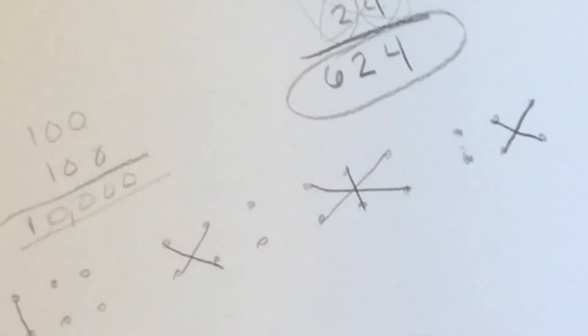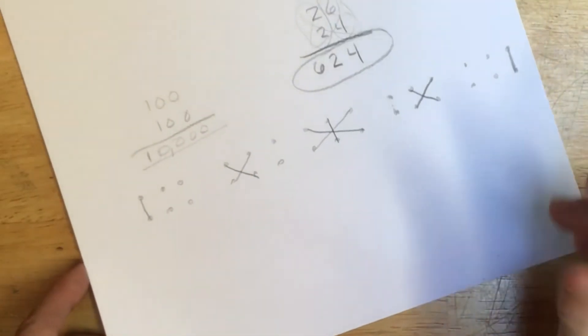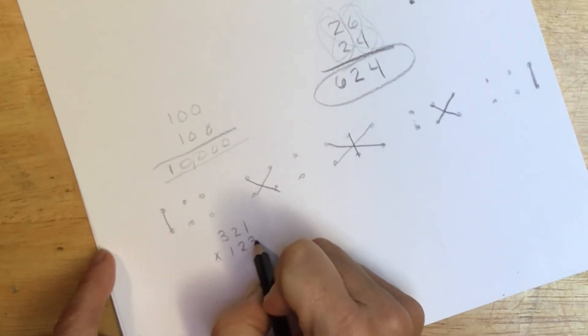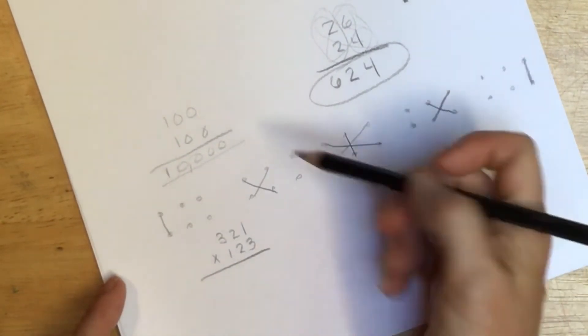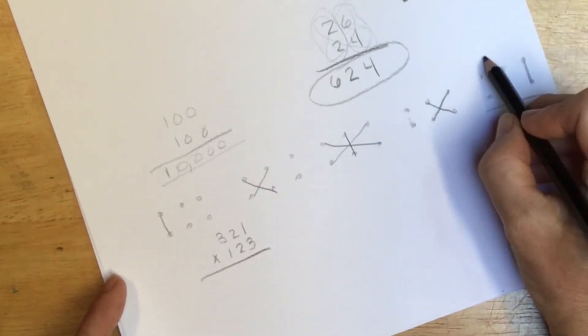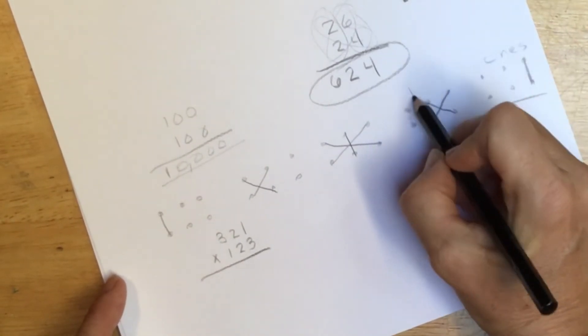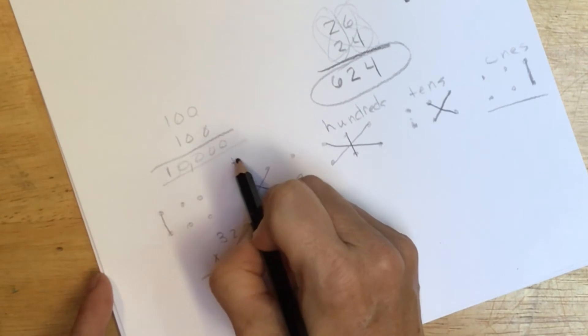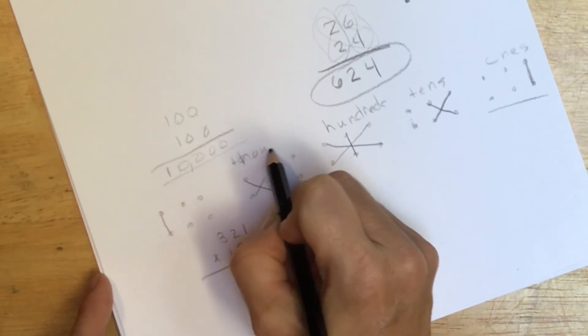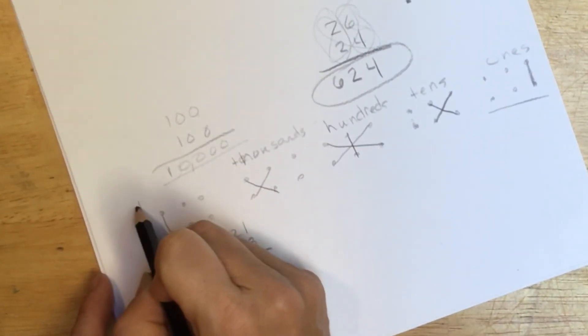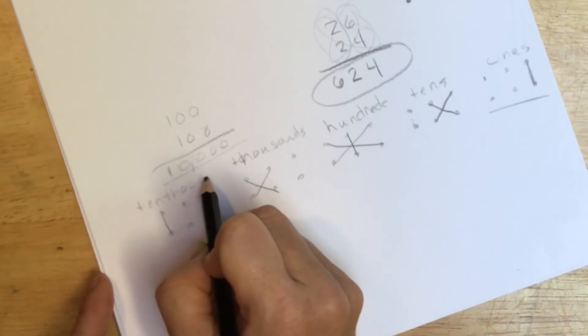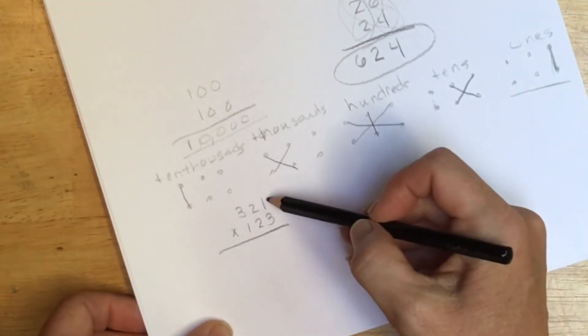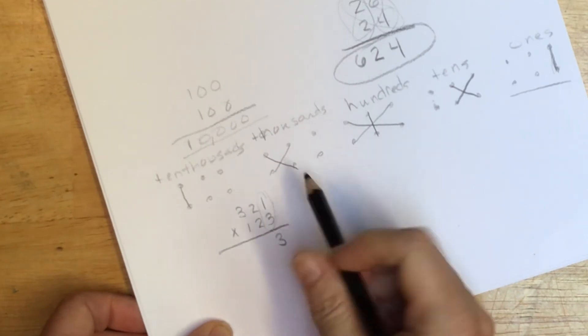So let's look at 321 times 123, something rather simple for us to do. These are our ones, tens, hundreds, thousands, and ten thousands. So to get our ones, we're doing these two numbers here, that gives us three. To do our tens, we're going to crisscross right here, so that's two and six, eight.